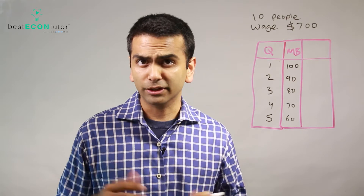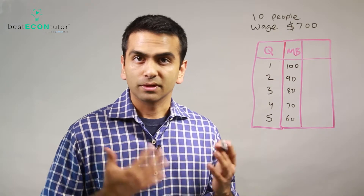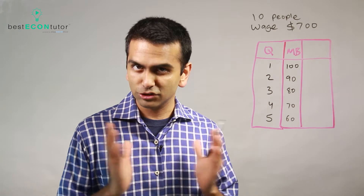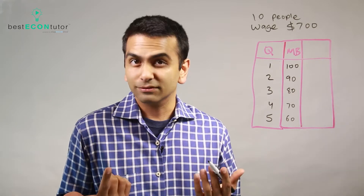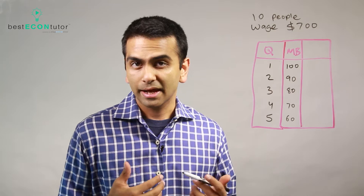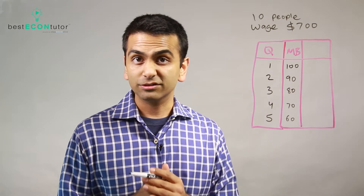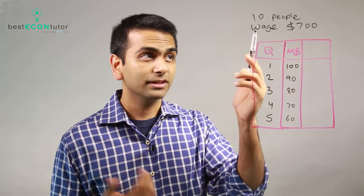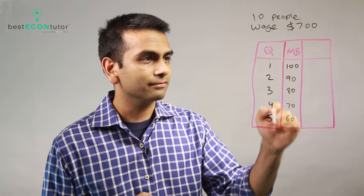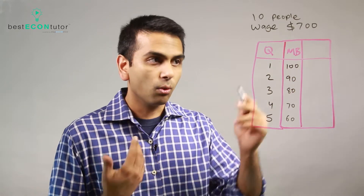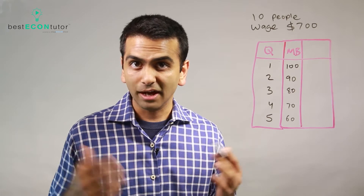Let's talk about what public goods are and how you solve problems involving them. Similar to the free rider problem, individuals won't make the efficient decision on their own. The efficient solution is to have everyone collectively make decisions. Imagine you live in an apartment building with 10 people and you're deciding whether to hire a security guard who costs $700 in wages. Each of the 10 residents has a marginal benefit from each additional security guard.